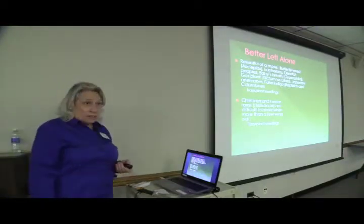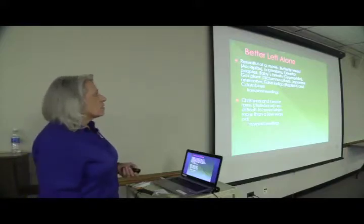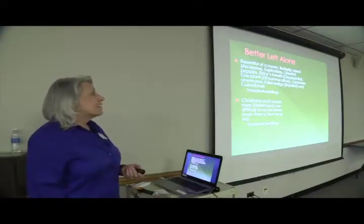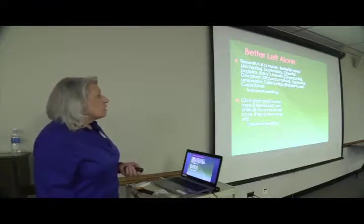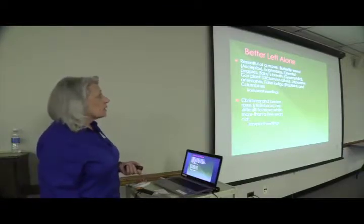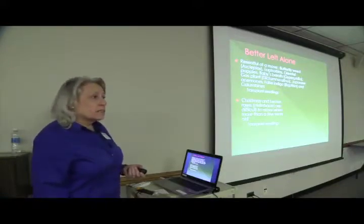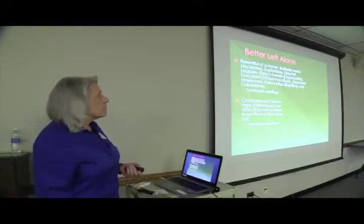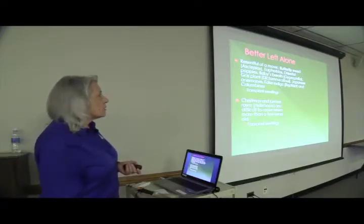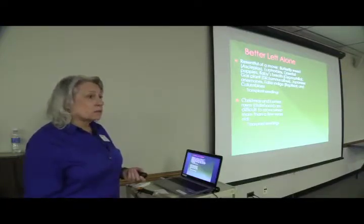There are some plants that you do not want to divide — things that resent moving include butterfly weed, which has a very long tap root, the euphorbias, oriental poppies, baby's breath, gas plant, Japanese anemones, baptisia, and columbines. For these plants it's best to transplant seedlings, which are prolific seeders. Look in the spring for seedlings coming up and transplant those instead. Butterfly milkweed grows very well from seed. Christmas and Lenten roses are also difficult to move when more than a few years old.